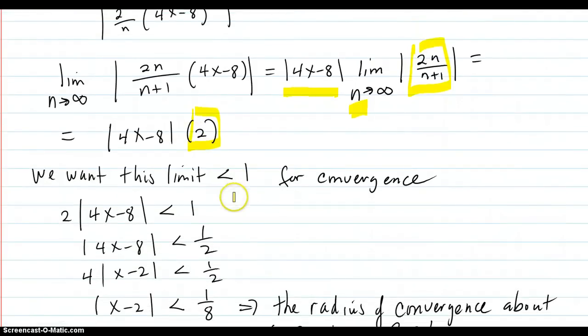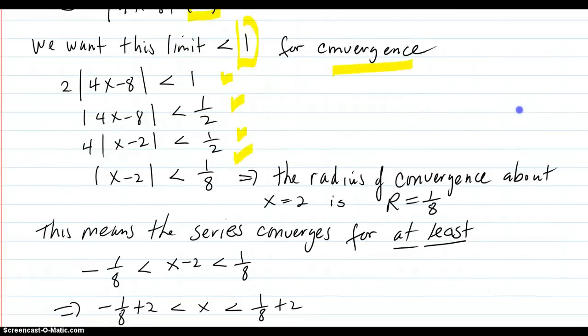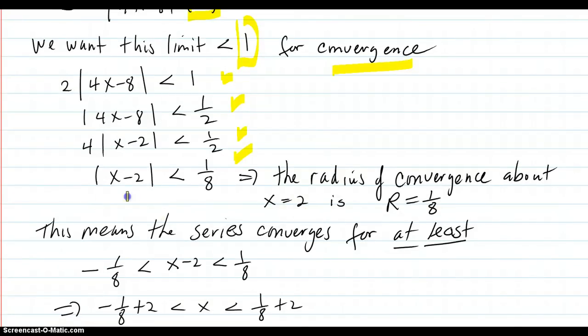And we want this limit to be less than 1 for our series to converge. So these steps here are solving it out. So this shows that the radius of convergence about x equals 2 is r equals 1/8.